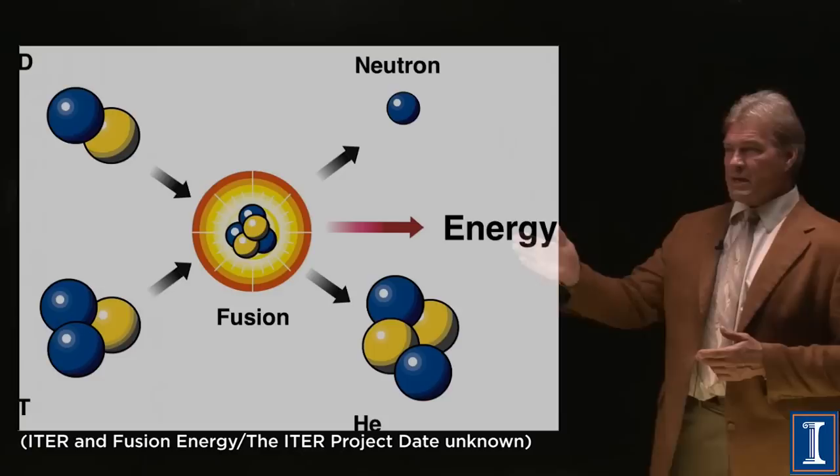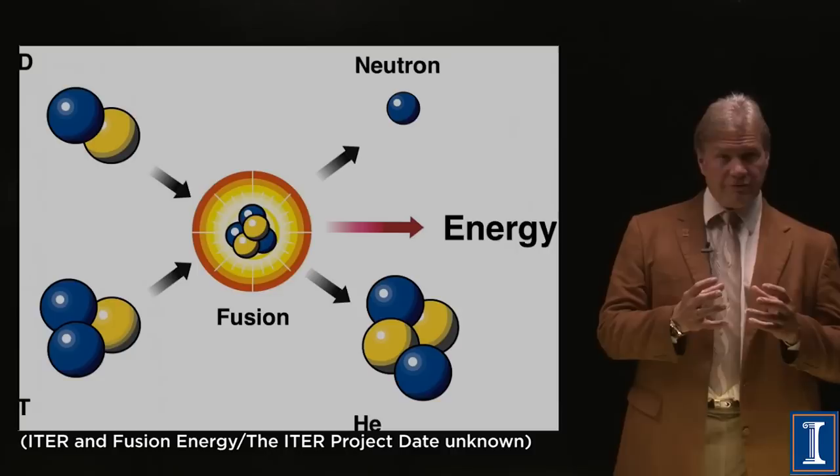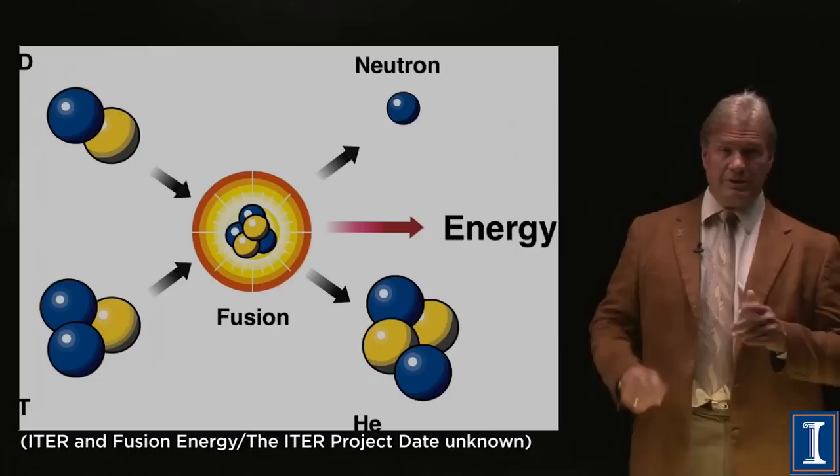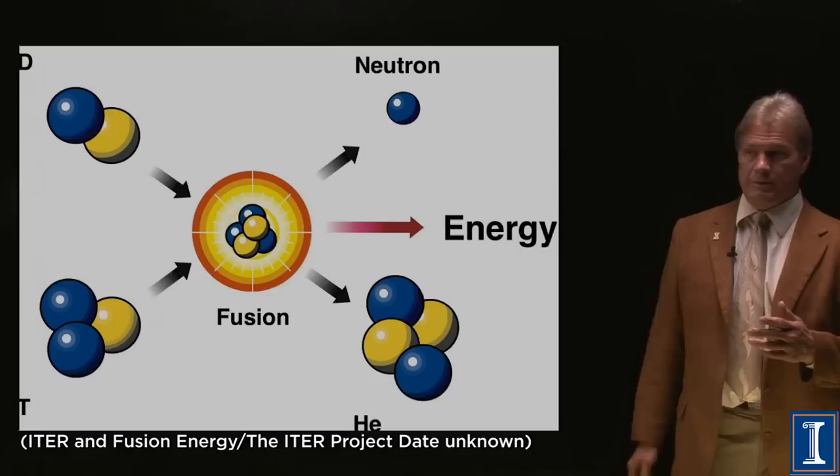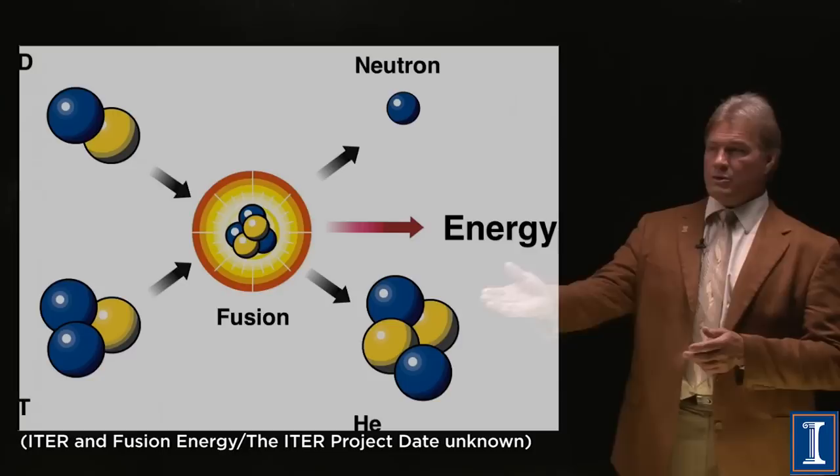So, if I take tritium and deuterium, and I get it hot enough, that 15 million degrees that the Sun was, you think, wow, that's really, really super hot. Well, we can do better than that on Earth. The temperature doesn't seem to be as big of a problem. We can get to 100 million degrees. We get up to those temperatures, fusion takes place, and it turns into helium and a neutron.